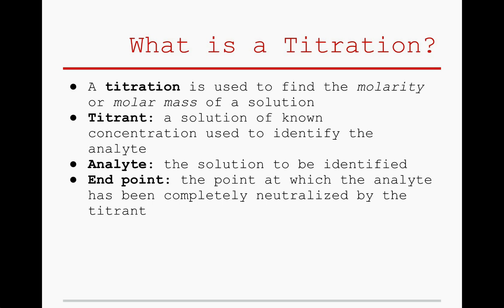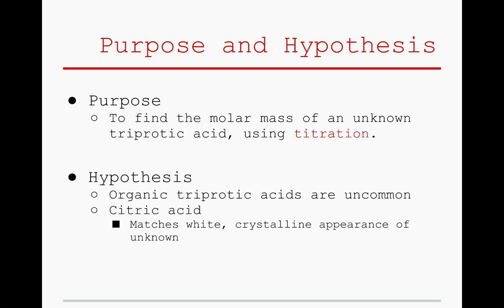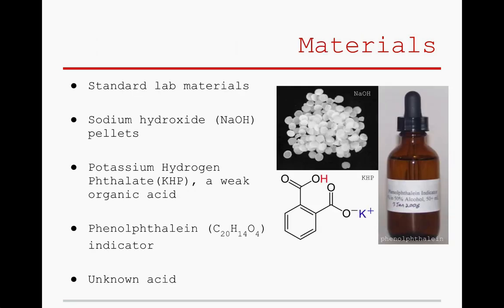Once the titration is complete, dimensional analysis can be used to find the molarity and the molar mass of the analyte. In this particular experiment, the objective was to find the molar mass of a triprotic acid using titration. Because organic triprotic acids are relatively uncommon, we expected the unknown to be citric acid. This would further explain the solid's white, crystalline appearance.